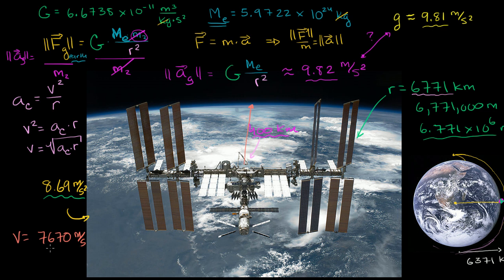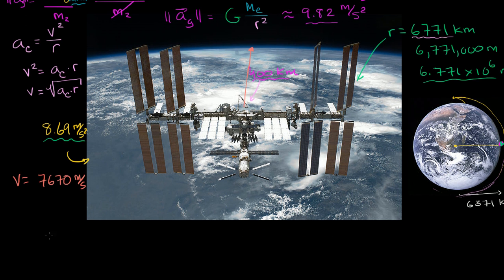And if we want to translate that into kilometers per hour, you just take 7,670 meters per second. If you want to know how many meters it's going to do in an hour, you just say, well, there's 3,600 seconds per hour. And so if you multiply that, that's how many meters it will travel in an hour. But if you want that in kilometers, you just divide by 1,000. You have 1 kilometer for every 1,000 meters. Meters will cancel out, seconds will cancel out, and you are left with kilometers per hour.